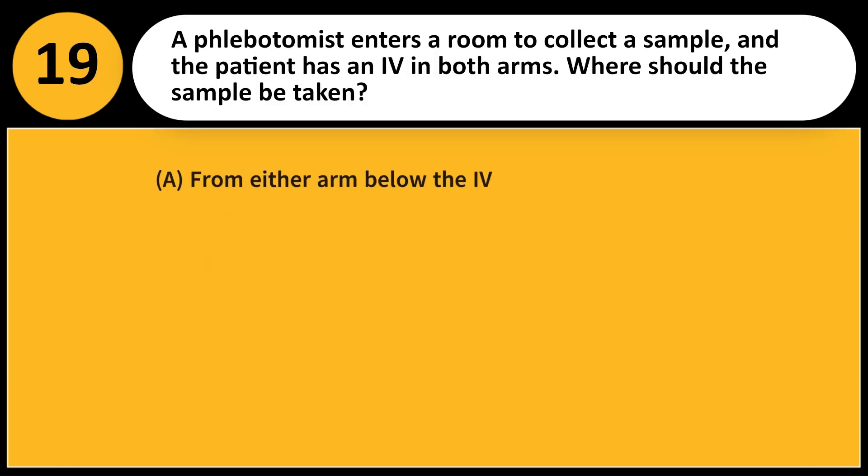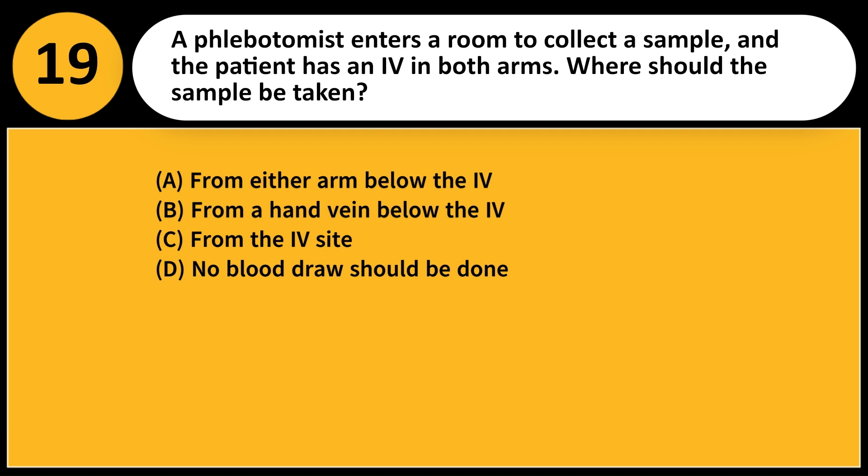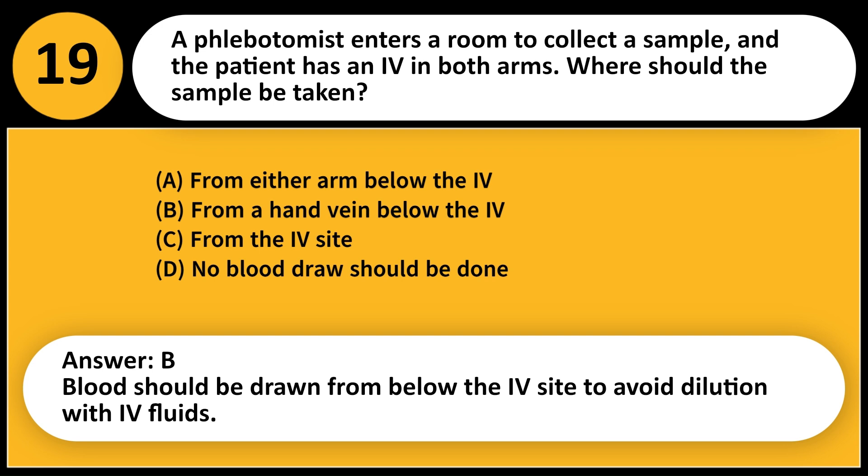A phlebotomist enters a room to collect a sample, and the patient has an IV in both arms. Where should the sample be taken? A. From either arm below the IV. B. From a hand vein below the IV. C. From the IV site. D. No blood draw should be done. Answer: B. Blood should be drawn from below the IV site to avoid dilution with IV fluids.